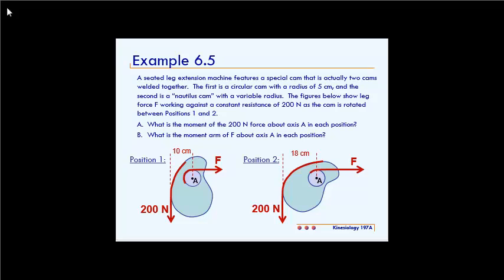This is example 6.5, which reads: a seated leg extension machine features a special cam that is actually two cams welded together. The first is a circular cam with a radius of 5 centimeters, and the second is a nautilus cam with a variable radius. The figures below show leg force F working against a constant resistance of 200 newtons as the cam is rotated between positions 1 and 2. Part A: what is the moment of the 200 newton force about axis A in each position? And Part B: what is the moment arm of F about axis A in each position?